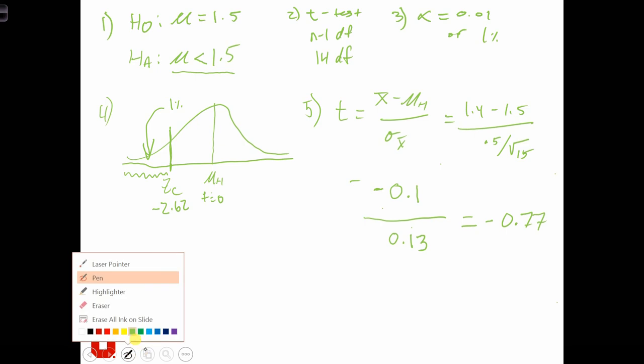When we plot that in our graph, that's about over here. t equals negative 0.77. And that is not in the zone of rejection.